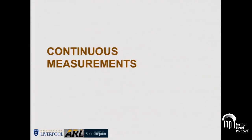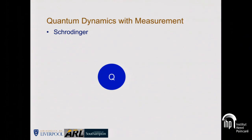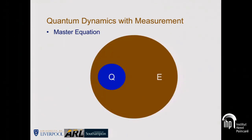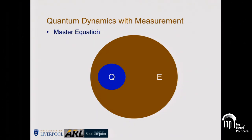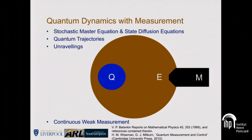So, continuous measurements — Marco's already talked about this in the last talk. If you start with Schrödinger evolution, you have a quantum system that evolves quite happily. You add in an environment, then probe the environment, and you end up with something like an unravelling. For just the environment, you start with the master equation. By adding in a real-time measurement record of the environment and integrating out, you can get the stochastic master equation and a lot of different unravellings thereof. I should particularly mention Belavkin, who did all of this work in Russian before the rest of us — in fact, before some of us were born.